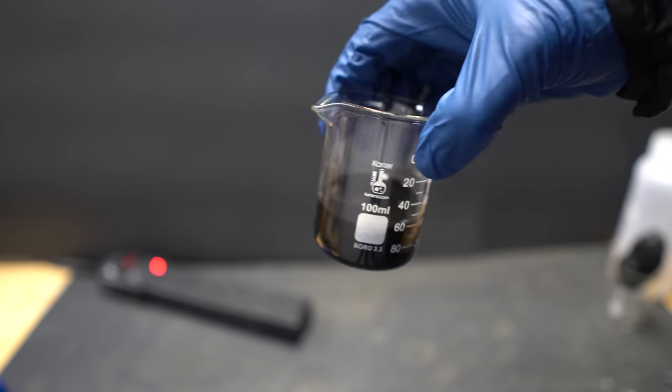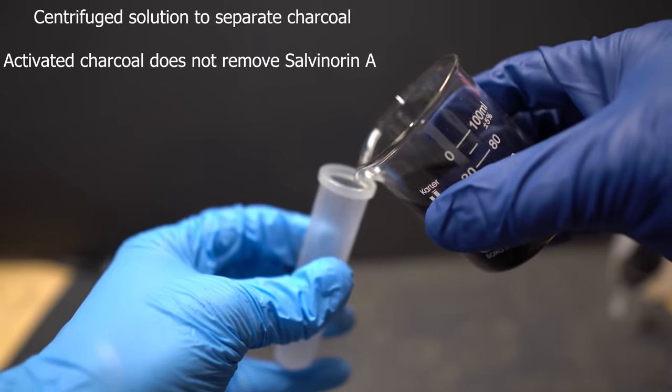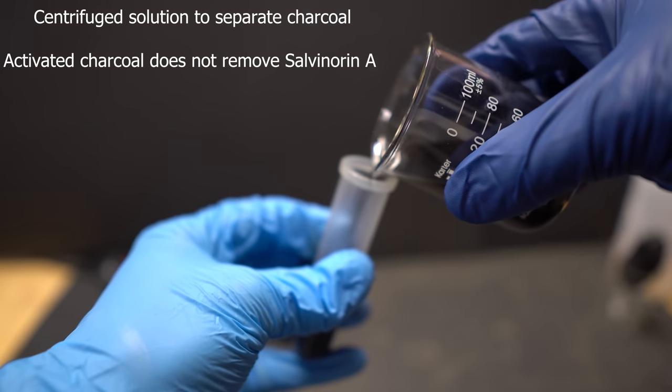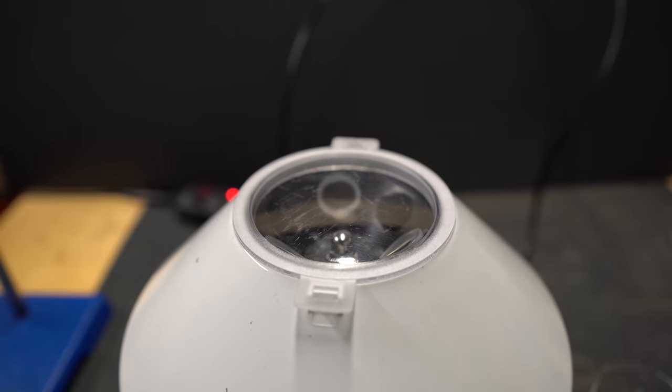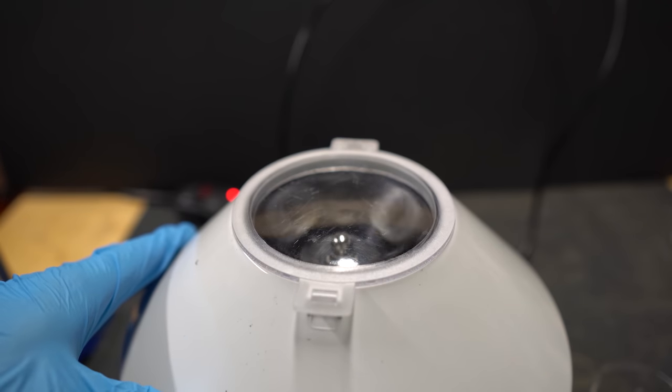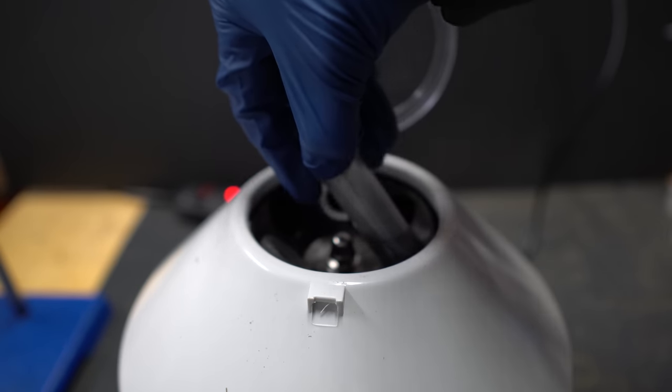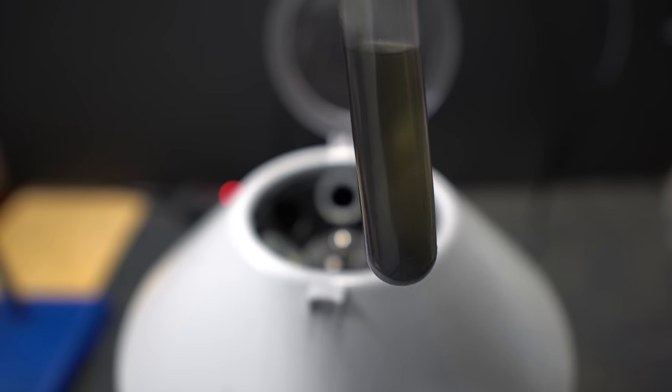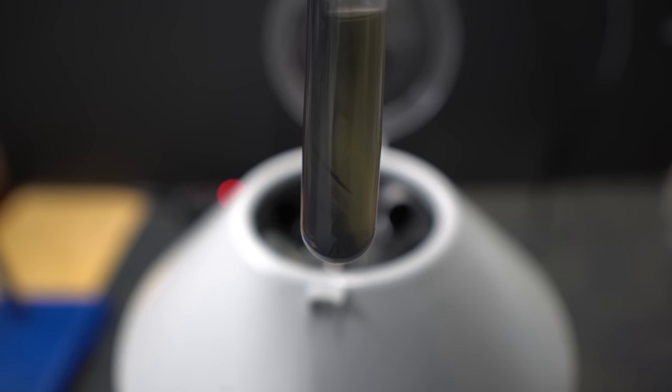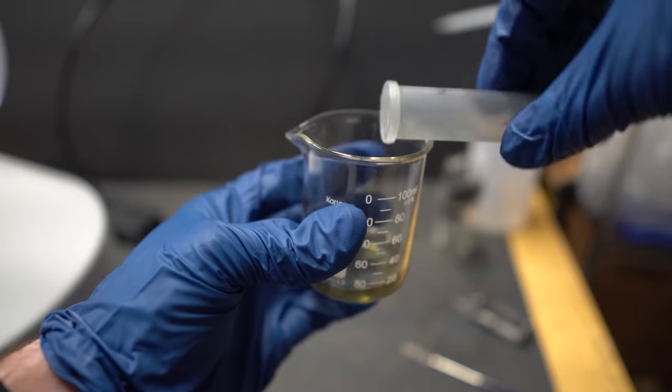Unfortunately this means I have to centrifuge everything again just so I can get the insoluble activated charcoal to the bottom and then pour out the acetone. This was the additional annoying step that I talked about earlier. The good thing is that activated charcoal is not soluble in acetone and it was pretty easily removed. I ended up letting it run for about 20 to 30 minutes and you can see the majority of the charcoal rests on the side and bottom of the centrifuge tube.